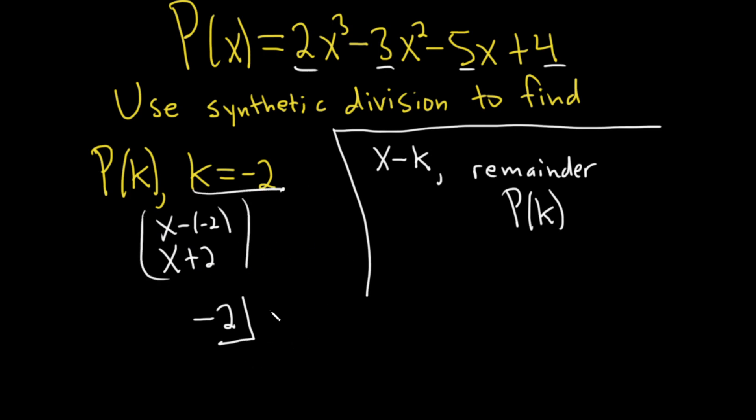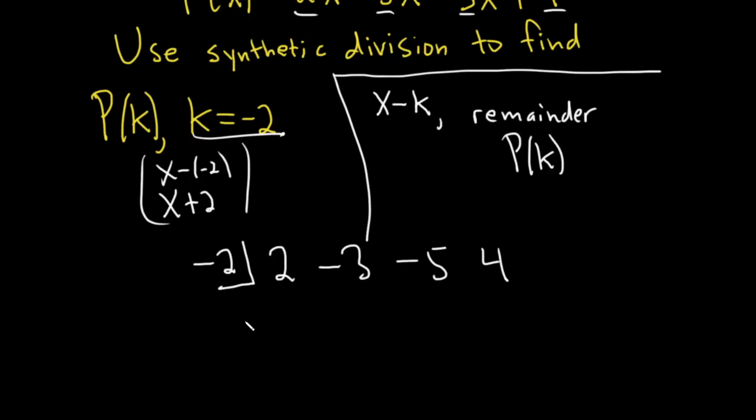And then we have 2, negative 3, negative 5, and then 4. So that's what you do: you write down those coefficients here and then you write this number down here. Always in these types of problems. Let me draw a line like this.